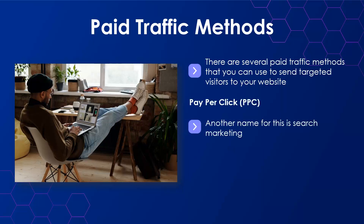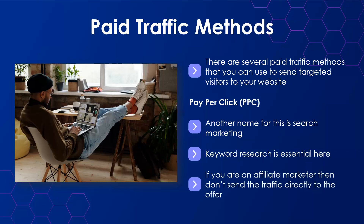Pay-per-click — PPC. Another name for this is search marketing. You place ads with Google or Microsoft (Bing, Yahoo, etc.) and they appear on the first page of the search results for keywords that you determine. It is possible to generate a lot of traffic very quickly with PPC, and it is a great way to test different pages on your website. Keyword research is essential here. Google and Microsoft will recommend the price you should pay per click, but some keywords can be very expensive, so be careful. If you are an affiliate marketer, don't send traffic directly to the offer — Google will not accept an ad like this. Use a landing page as a bridge, capture the visitor's email address, and add them to your email list.